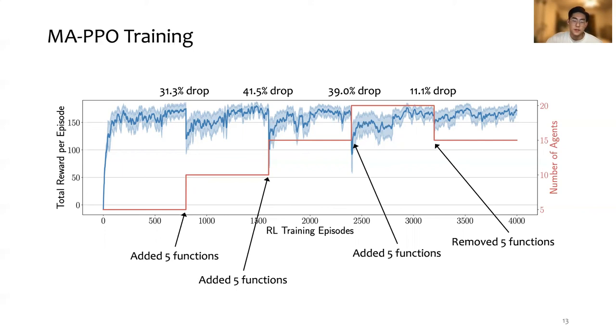When we removed five existing functions from the environment, the reward drop was not as much as the previous cases, which is only 11%. We attribute this to the fact that there was no added agent whose reward starts to be randomly lower than a trained agent. The team reward still dropped due to the fluctuation of the environment as there were five newly removed functions.